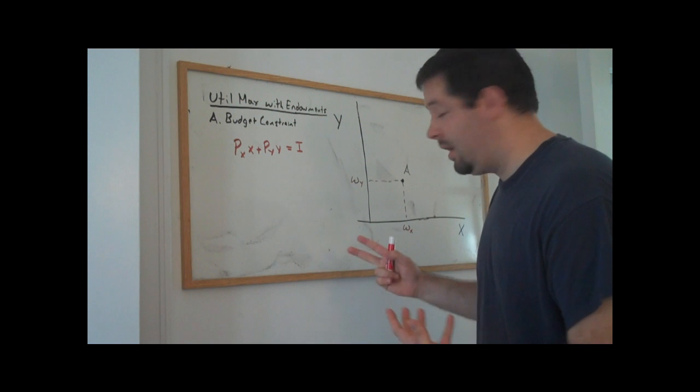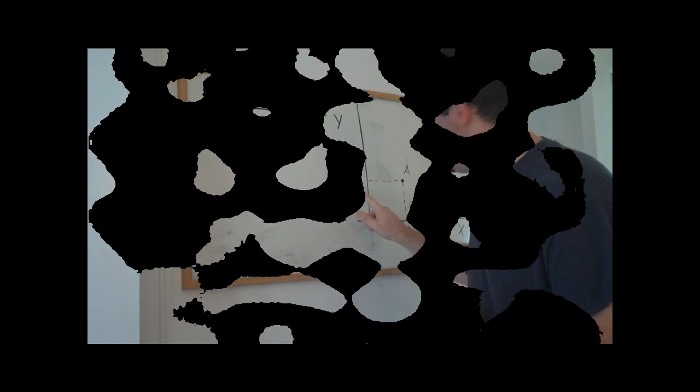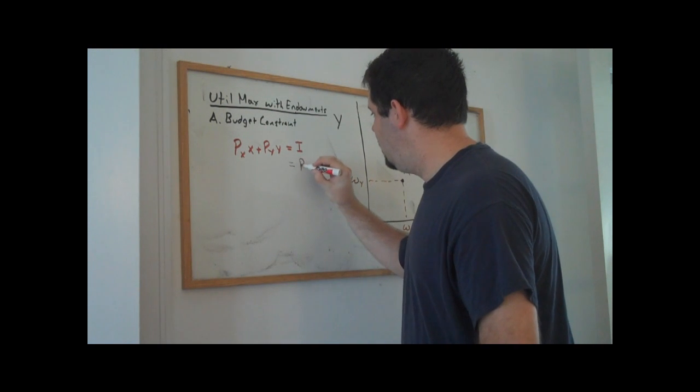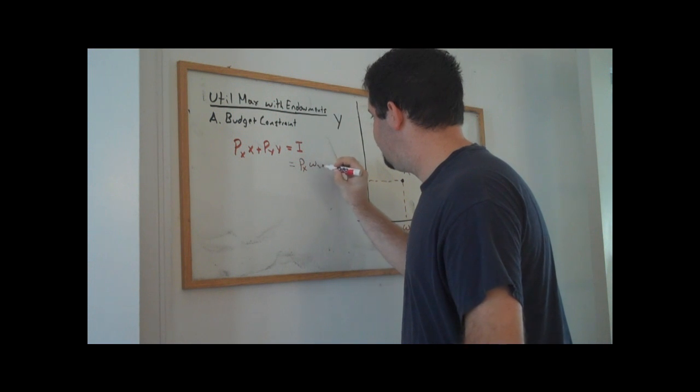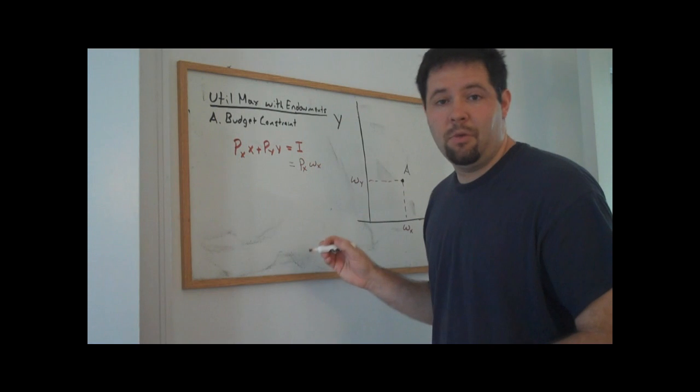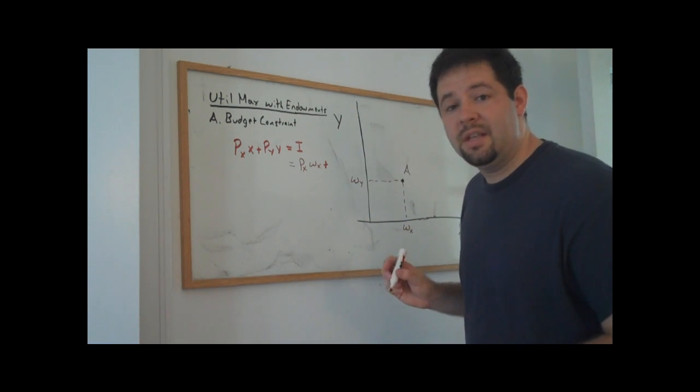Here we're denoting the initial bundle that the consumer is endowed with as Omega X and Omega Y. That would just be how much money the consumer could get from selling all of the X plus how much money the consumer could get from selling all of the Y.